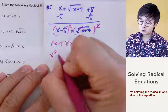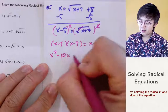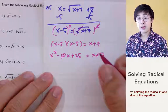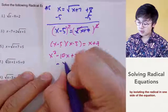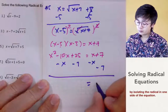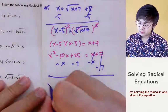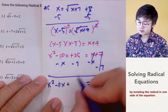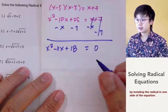Expanding the left side using FOIL: x squared minus 10x plus 25. Setting equal to x plus 7 and equating to 0 by subtracting x and 7 from both sides, we get x squared minus 11x plus 18 equal to 0.